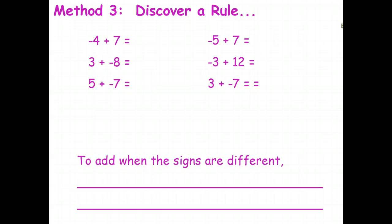What's the rule for adding when the signs are different — like a negative and a positive, or a positive and a negative? Let's do it using money and bills first and then see if we can come up with a rule.